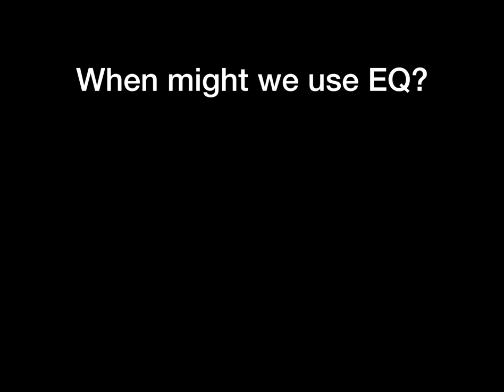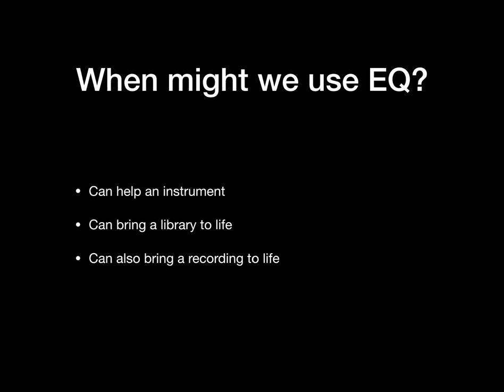Why might we use EQ? If you EQ a particular instrument, it might help it fit better in a mix. A good example is the French horn — if your horn library has quite a rich mid-range sound, cutting these mid-range frequencies can help it sit better with the rest of the instruments. Another reason is that your libraries might require it, if recorded quite brightly or lacking clarity. The same applies for instruments you may have recorded yourself.